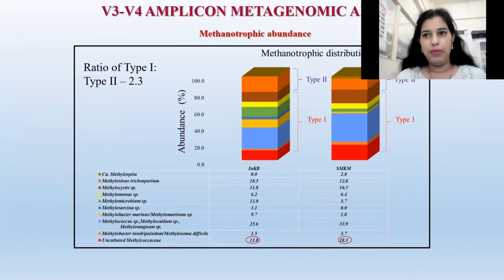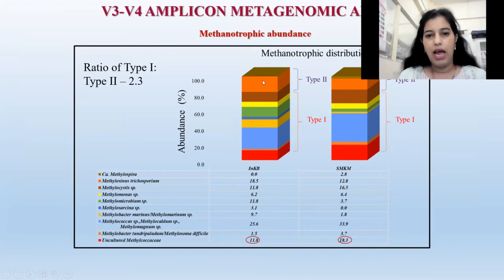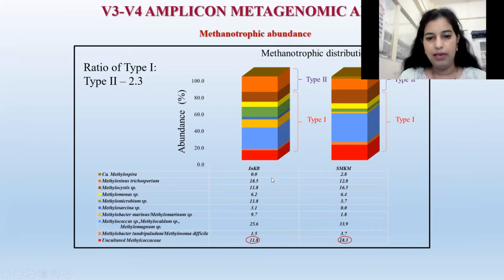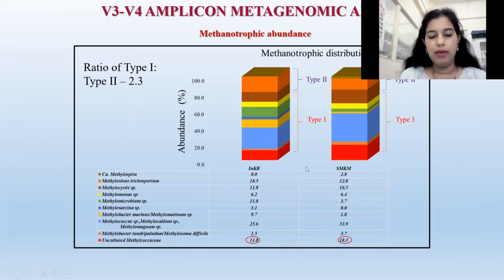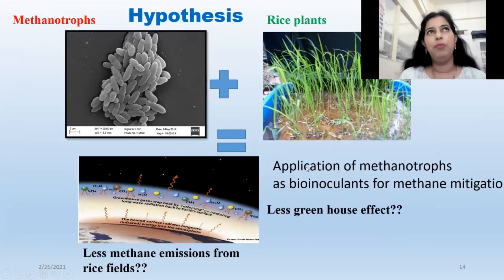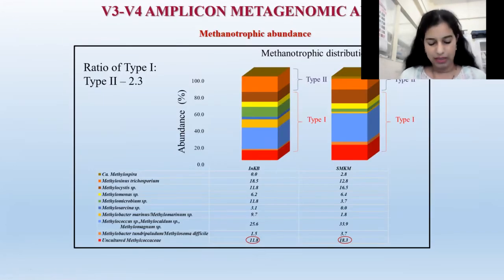We also use next-generation sequencing, like V3-V4 amplicon metagenomics, to understand the community structure. Here you can see two different fields — one from the Murshi region with an Indrayani variety, and another from the Kokan region with a Sona-Massuri rice variety. If you see the overall methanotrophic community structure, it is more or less the same across these fields, which was quite surprising for us. We are now working more on the metagenomics of methanotrophs.